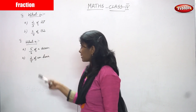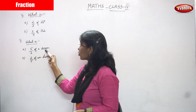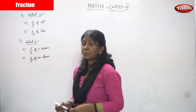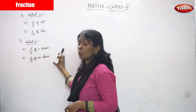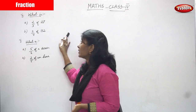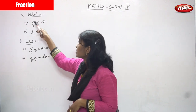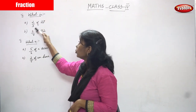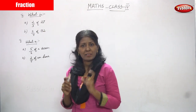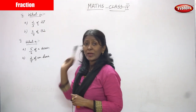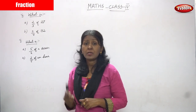Next is the same type but what — 5 by 6 of a dozen. Here they are given the number but in words. Now we are going to solve the problems. First one is: what is 2 by 3 of 27? 2 by 3 is a fraction of 27. 27 is a whole number and 2 by 3 is a fraction.